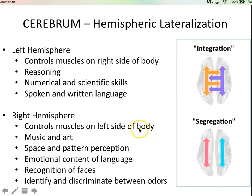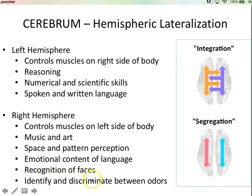The right side controls muscles on the left side of the body — remember, we have those decussations in the pyramids of the medulla. When people are appreciating or performing art and music, the right side lights up more. Space and pattern perception — like navigating a virtual maze — shows more activity in the right side. The emotional content of language is more right-hemisphere — when you curse, there's a lot of emotion behind those words. The fusiform gyrus is predominantly in the right hemisphere, and identifying different scents also activates the right side more.